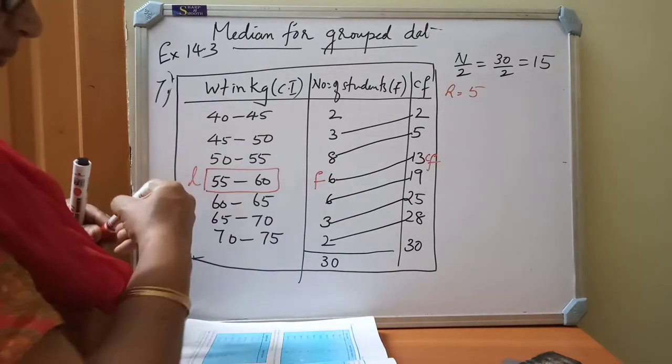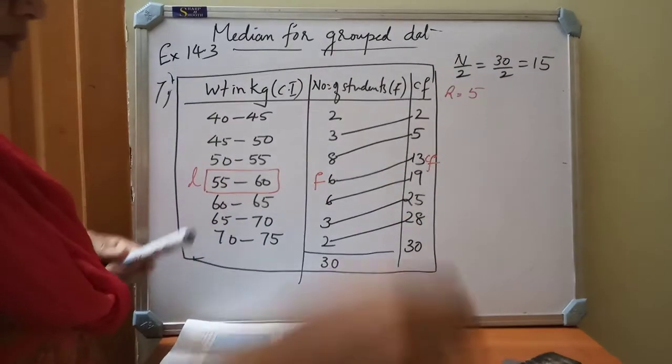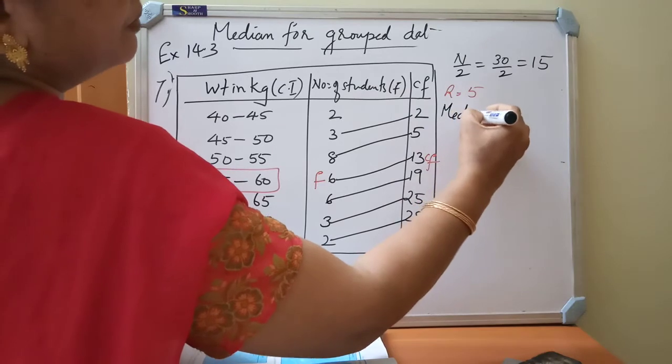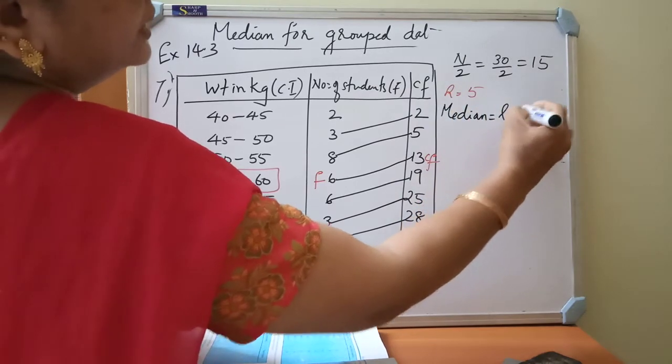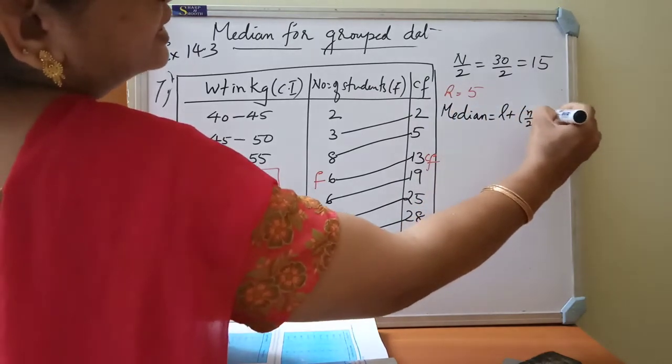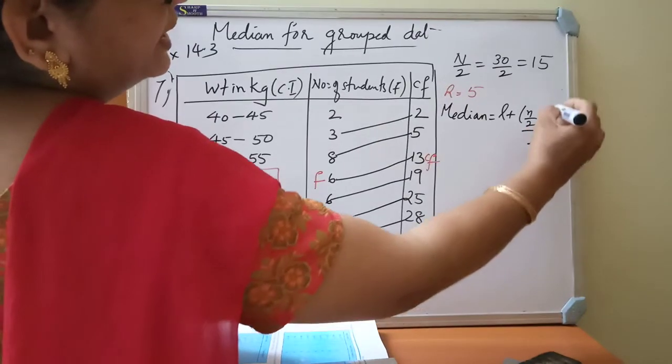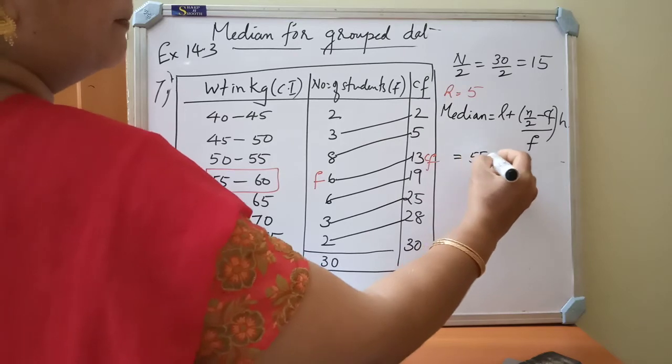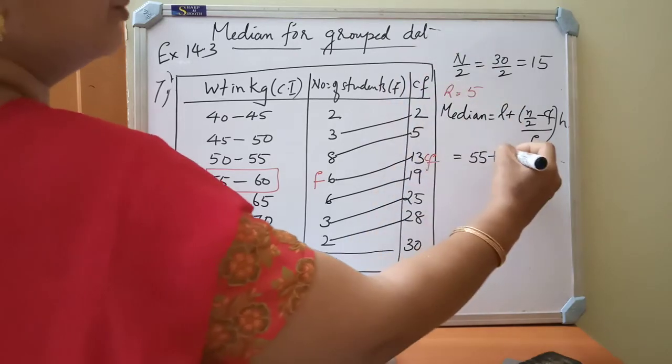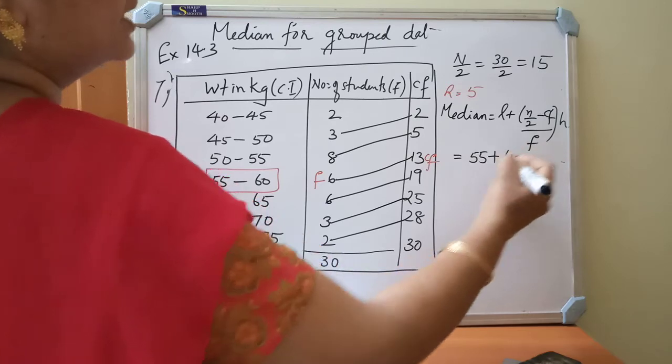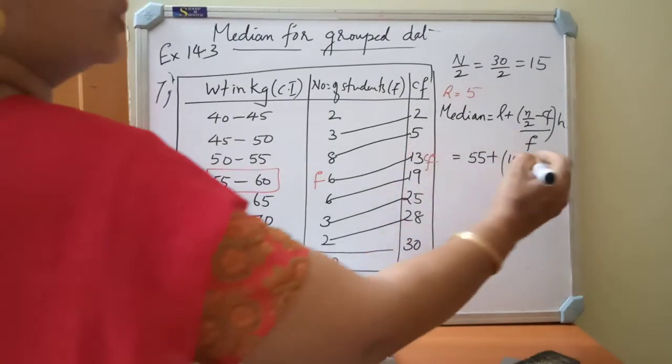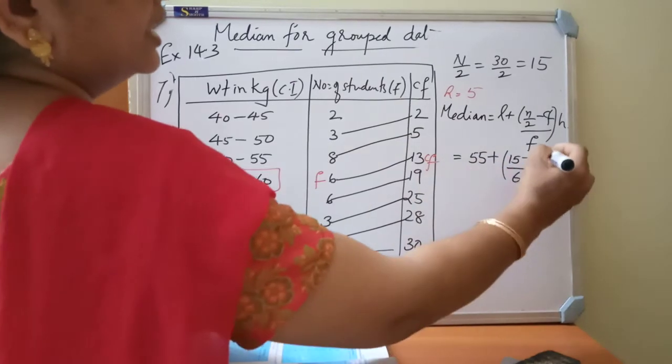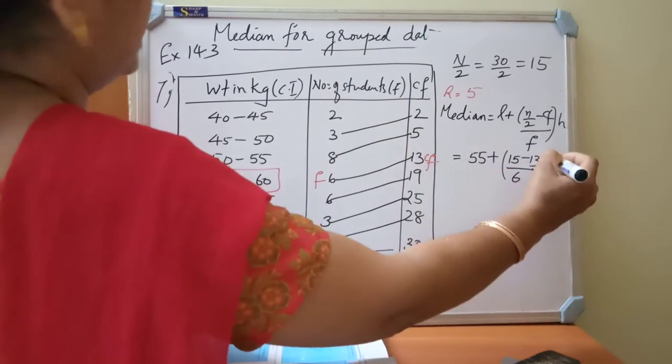So median is equal to L plus n by 2 minus CF, whole divided by F into H. So substitute L, 55 plus n by 2, 15, minus CF, cumulative frequency, 13, divided by frequency, 6, into H. H is 5.